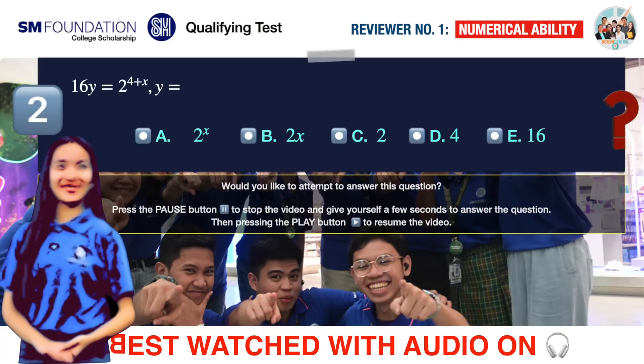Question number two. Given the equation, 16y equals 2 raised to the quantity 4 plus x. Solve for y.